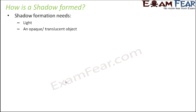Now the question is — how exactly is a shadow formed? For a shadow to form, two things are absolutely important: light has to be present, because in darkness shadows are not formed; and an opaque or translucent object has to be present, because if there is no object to block light, shadows will not be formed.